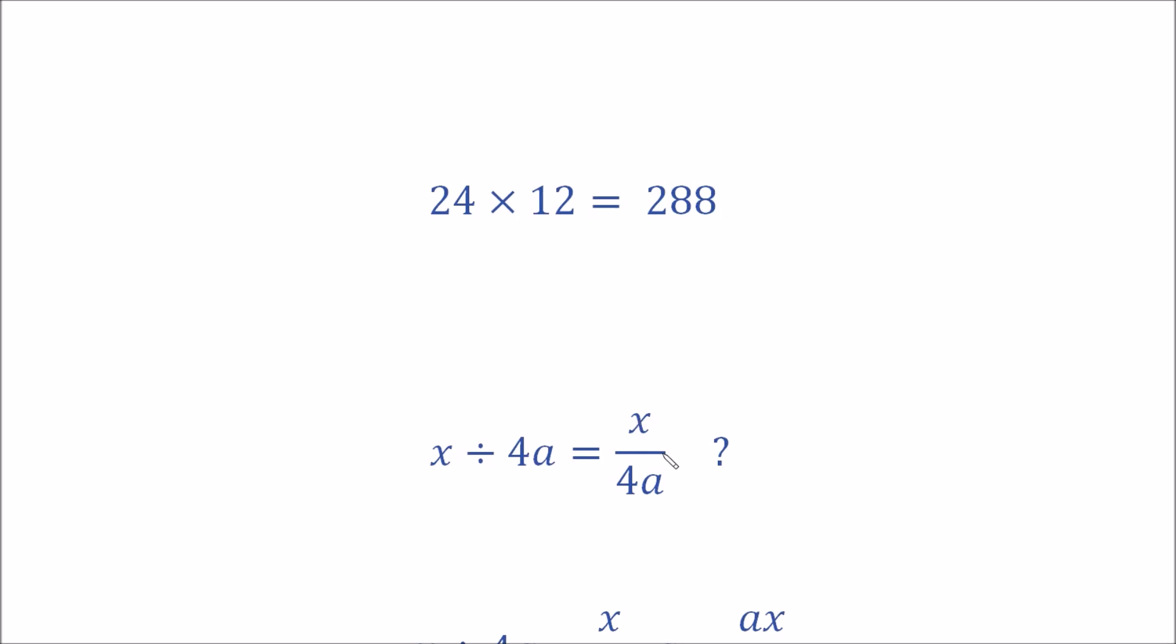However, using the BODMAS/PEMDAS convention which insists we go left to right, as we can see there are two operations of the same precedence, in that case we get ax over 4 because we would do the division first using that convention, and that will result in ax over 4.